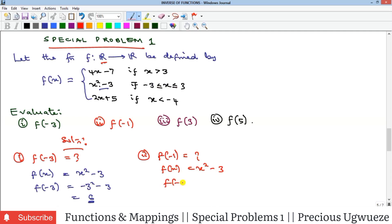Our f of minus 1 will be minus 1 squared minus 3. Minus 1 squared is 1, minus 3 will give us minus 2. For example 3.